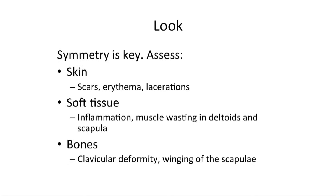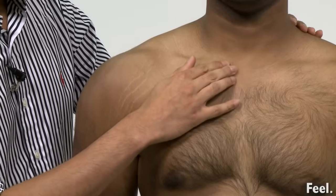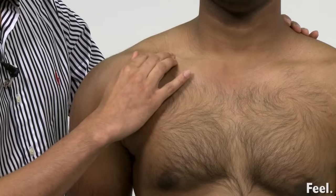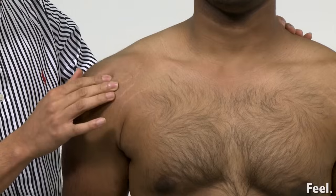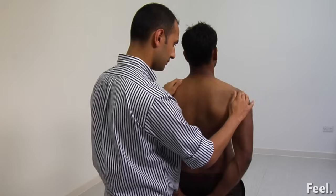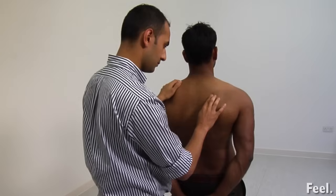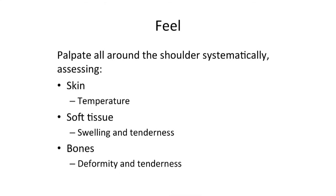On palpation, feel for deformity, tenderness, temperature and swelling. Start at the sternoclavicular joint, moving along the clavicle to the acromioclavicular joint. Feel for the coracoid process, around the acromion process, and then move along the spine of the scapula. Feel for the medial border. Tenderness over the acromioclavicular joint may indicate osteoarthritis, while tenderness over the greater tuberosity may indicate impingement or rotator cuff pathology.